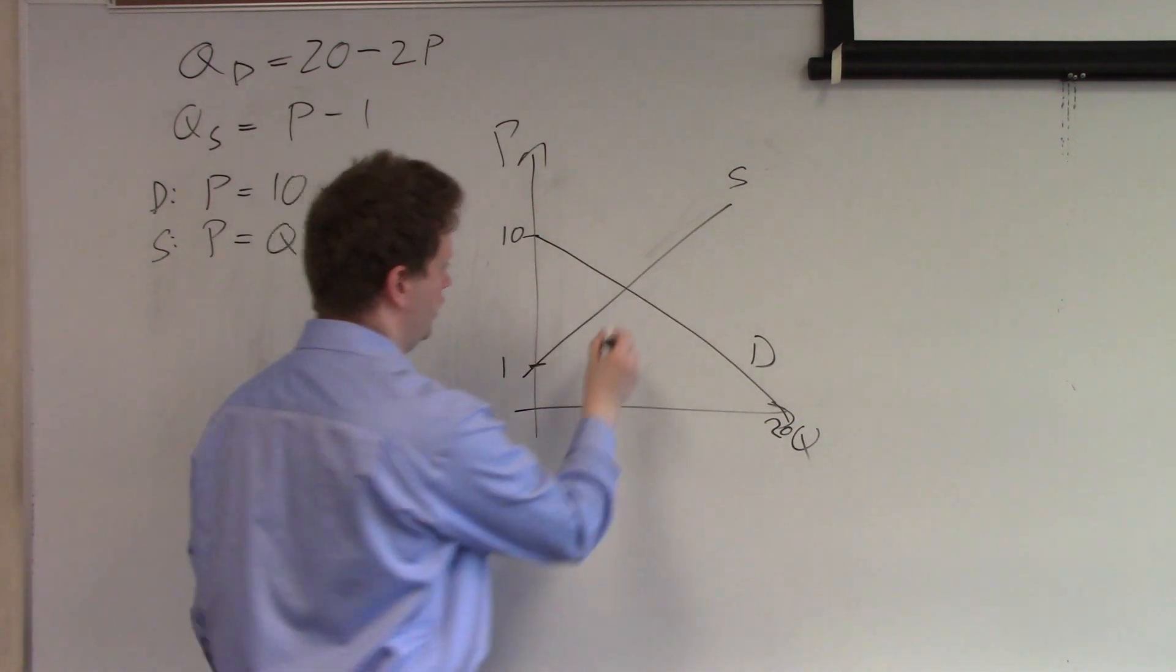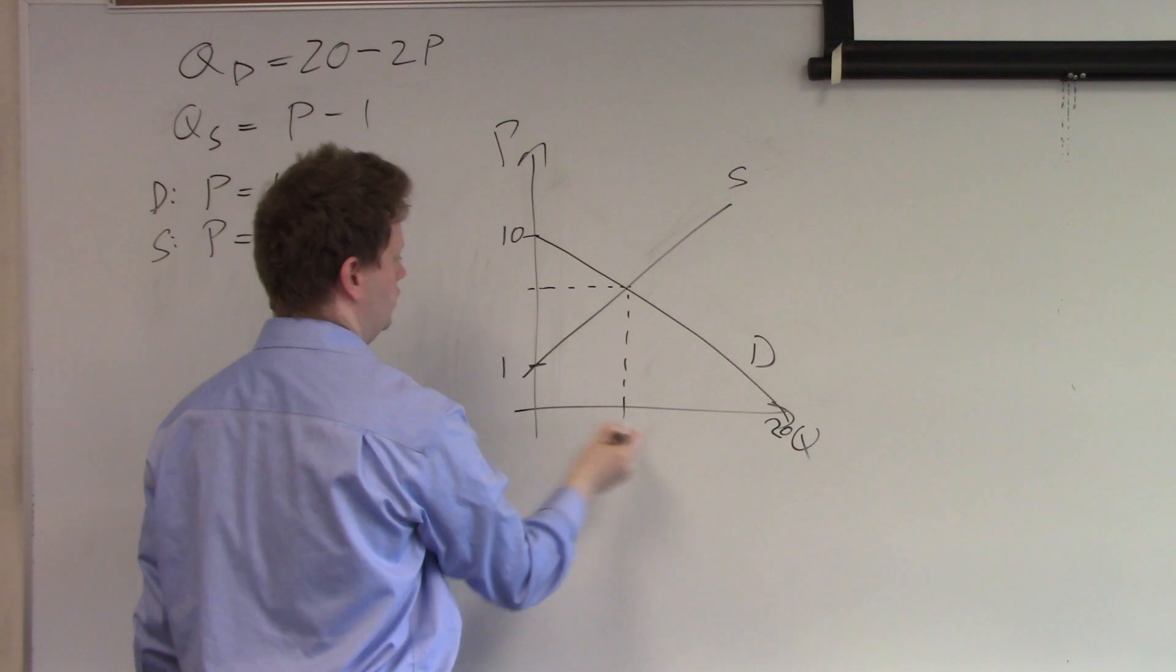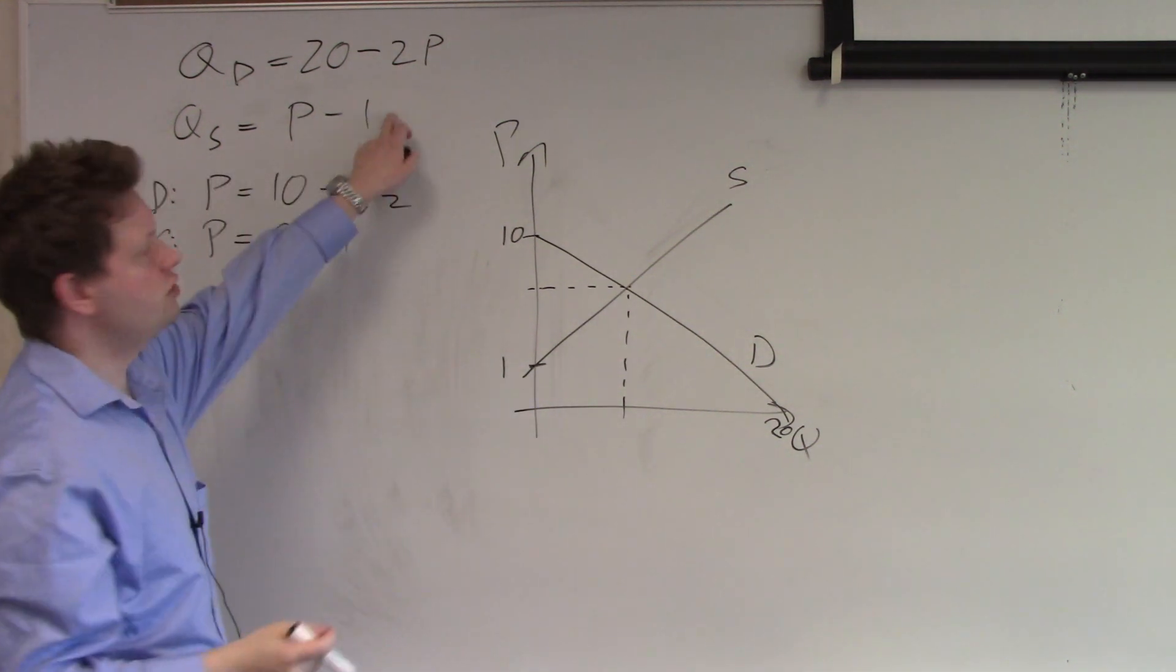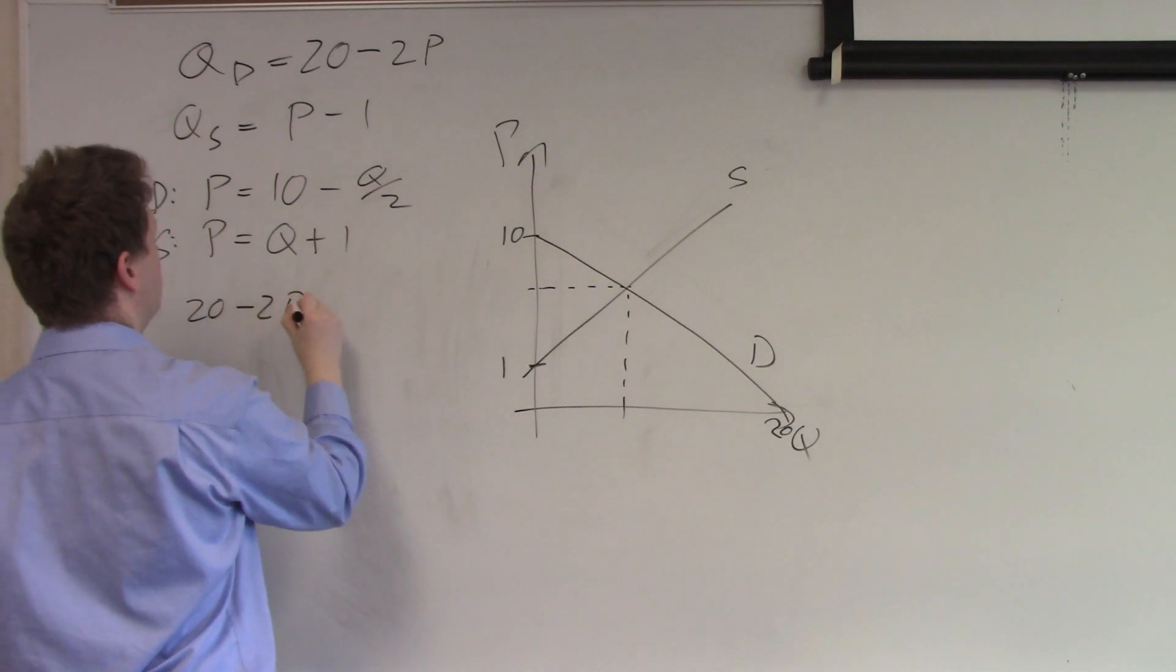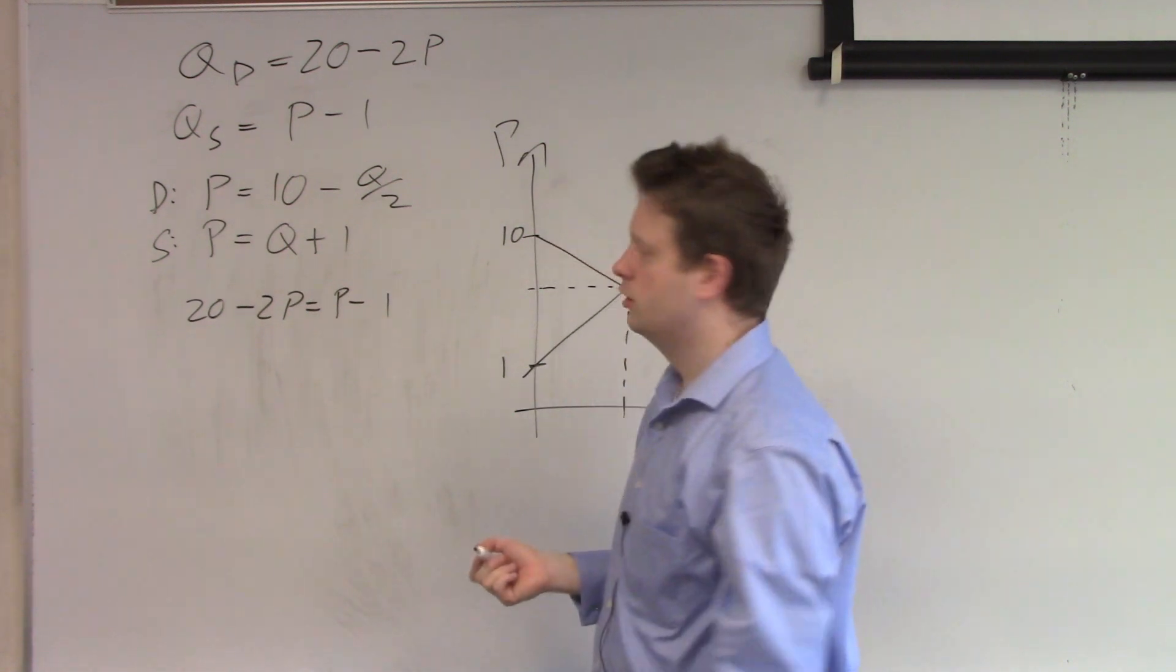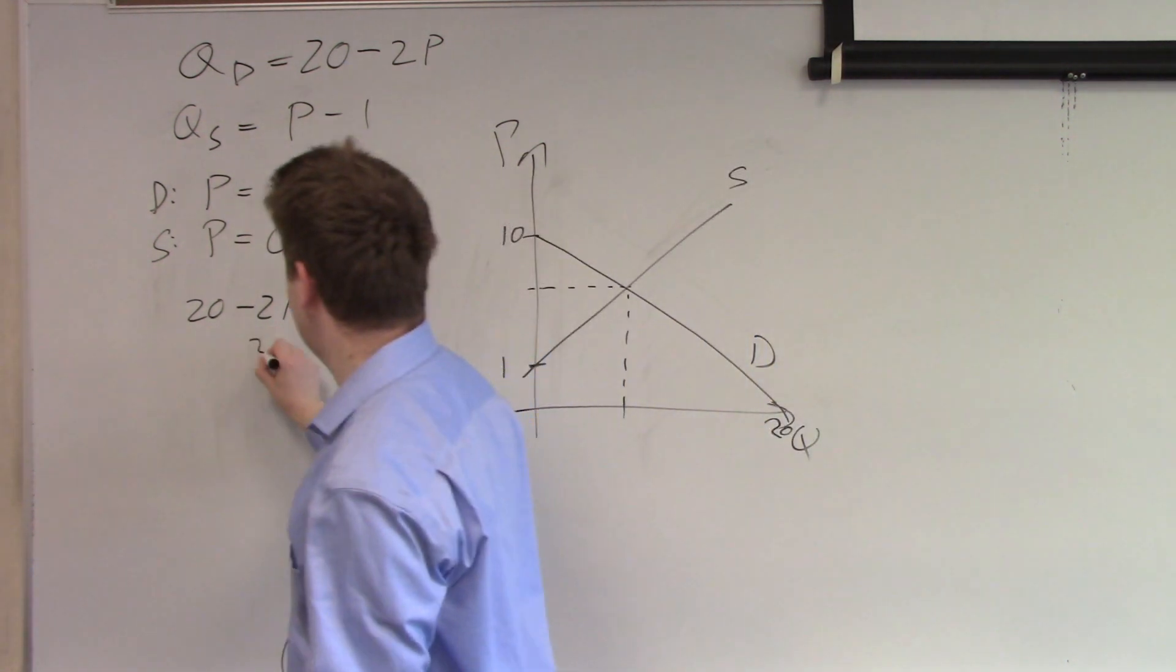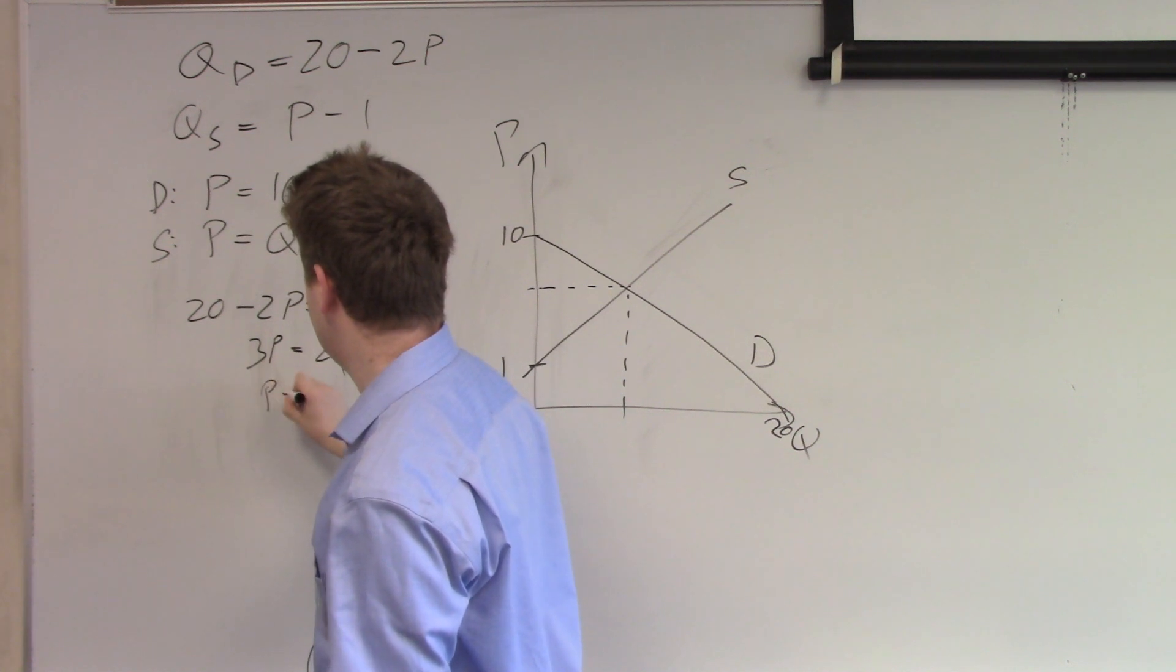Now we need to find the equilibrium before the tax was imposed. And to do so we set these two equal to each other. So we get 20 minus 2P equals P minus 1. We rearrange, we get 3P equals 21. So P equals 7.